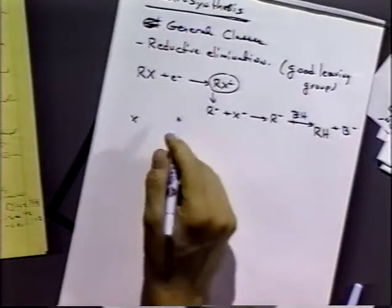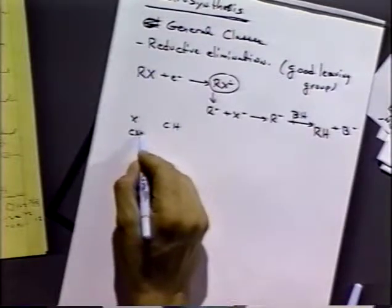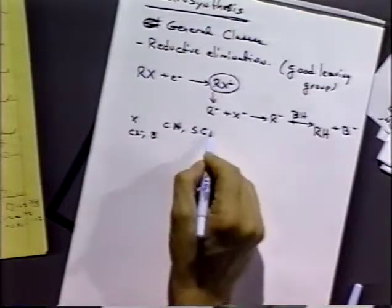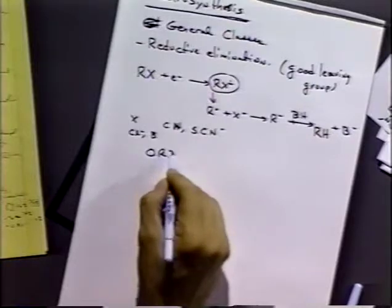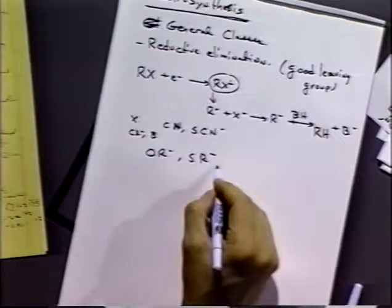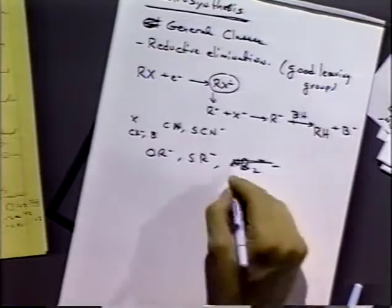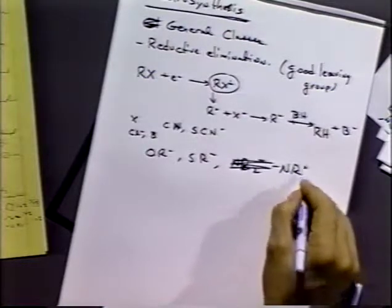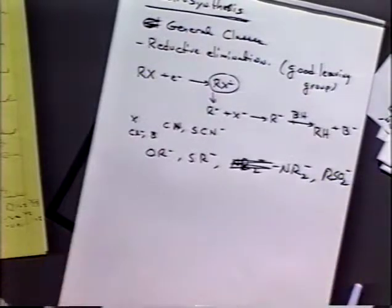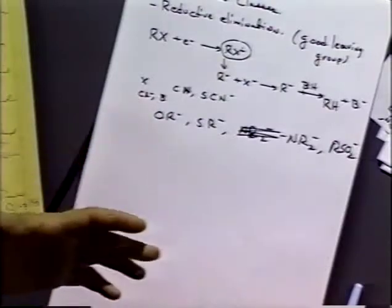So X can be halides, all pretty good, cyanide, thiocyanide. Sometimes you can get OR minus, the thiol types, amides, and so on. As I said, if the R is alkyl group that reaction is often concerted. In other words, as soon as you reduce it, the reaction has basically completed, the halide or whatever will be coming off. For aryl halides, often it's considered to be a stepwise reaction. You can observe the transient and get a rate constant for that reaction.